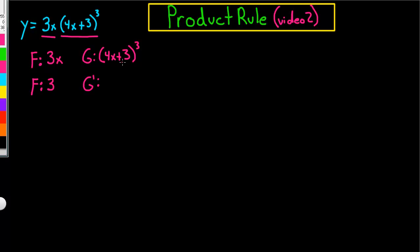So, but let's simplify this for a second. So, the derivative is 4 times the exponent, which is 3. That's going to leave us with 12. Alright, and then we'll multiply that by 4x plus 3 to the second power.